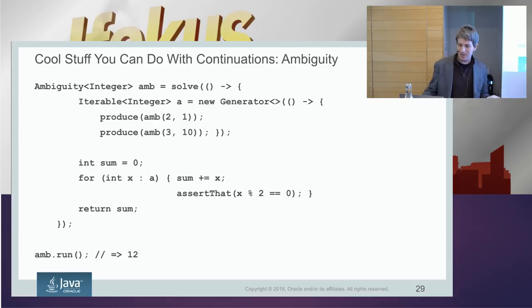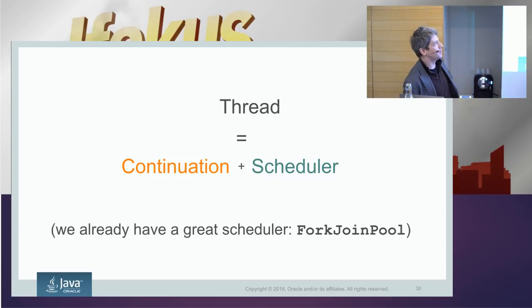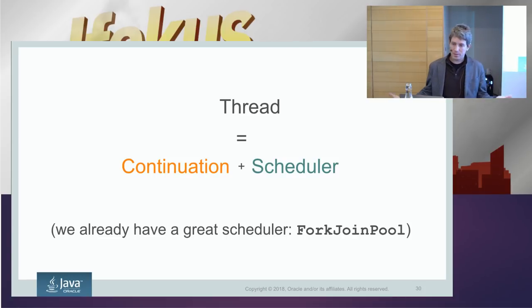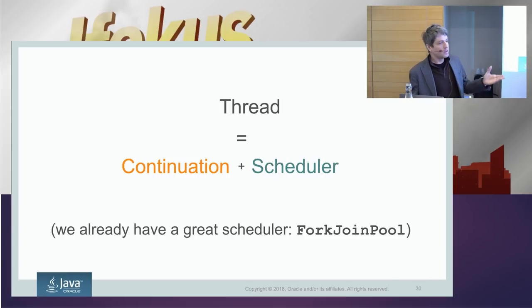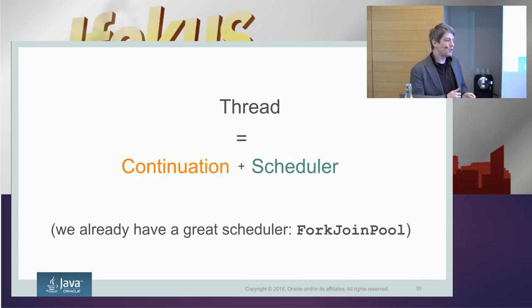Continuations are very, very powerful — you can do crazy things with them. But the most important use, where we get most of the benefit, is lightweight threads. A thread — not just fibers, but a thread in the OS itself — is just a continuation plus a scheduler. Instead of saying 'continuation, please continue here,' a thread tells the scheduler: here's a continuation, it's runnable because it was waiting for something, please assign it to a CPU core and run it when you have the CPU.